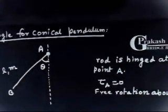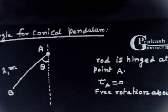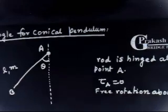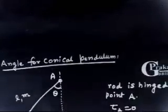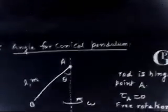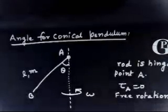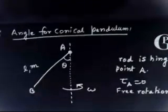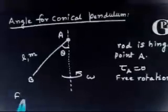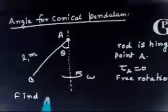So, this thin uniform rod of length L and mass M rotates uniformly with angular velocity omega. We have to find theta — the angle between the rod and the vertical. So what is theta? Find theta.